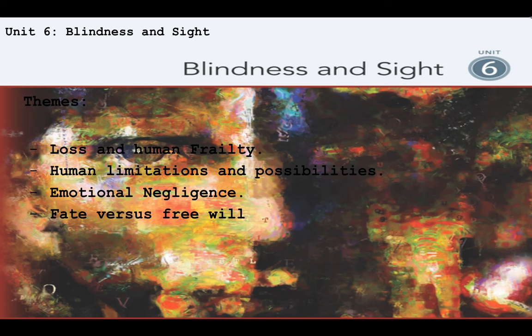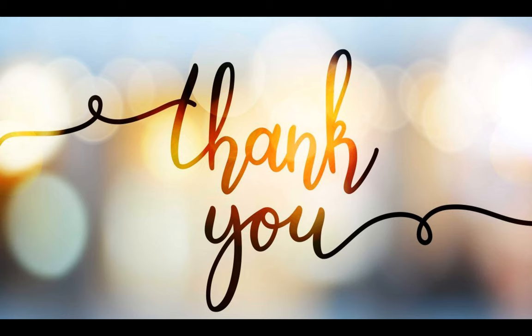The last unit covers 'Blindness and Sight,' with themes of loss and human frailty, human limitations and possibilities, emotional negligence, and fate versus free will. And there you have it — the exciting journey that awaits you in your high school English class.